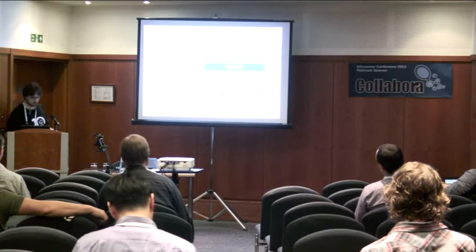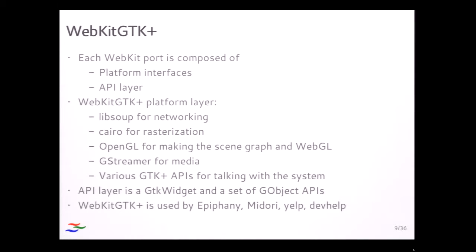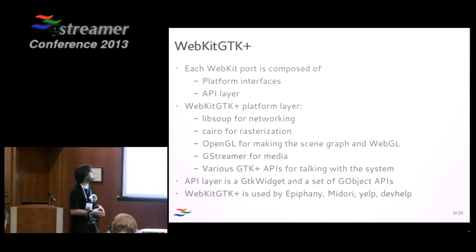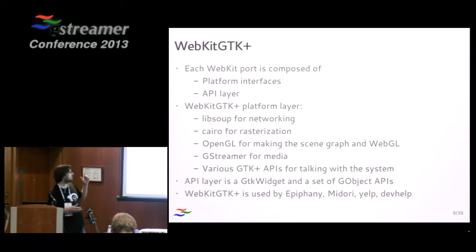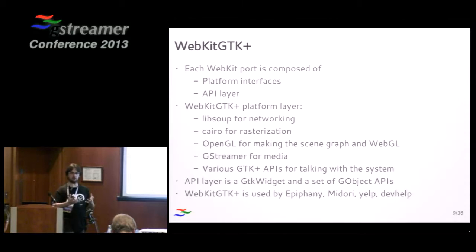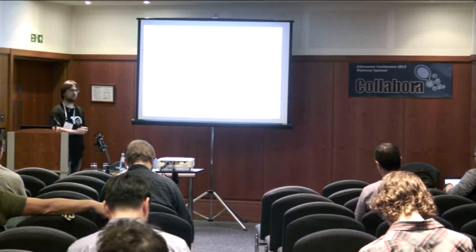A WebKit port is composed of the platform interfaces and the API layer. In the case of WebKit GTK, we use Libsoup for networking, Cairo for rasterization, OpenGL for compositing and WebGL, GStreamer for multimedia, and some other various GTK APIs to talk to the system. The API layer is a GTK widget that you can embed as a button or whatever. As far as I know, it's used in Epiphany, Midori, Yelp, and some other programs. I think Evolution is being ported now to WebKit.